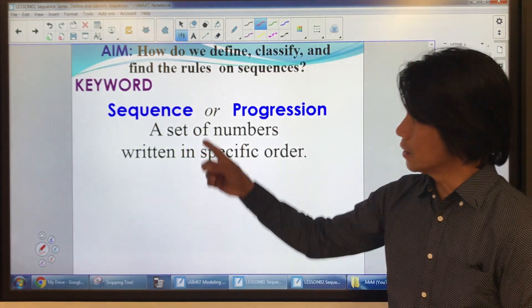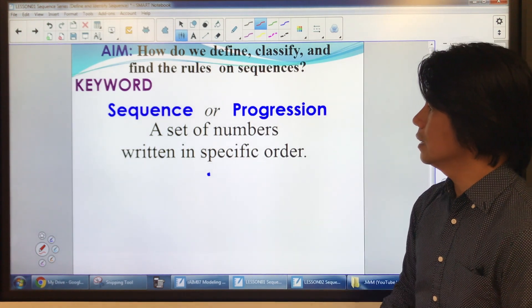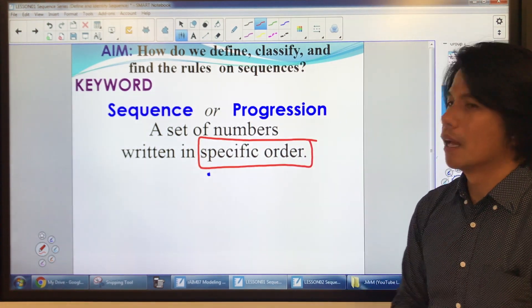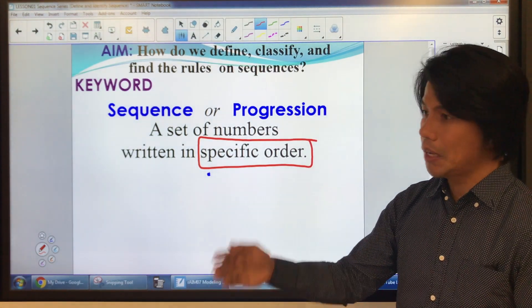Now let's go to the keyword. Sequence or progression is a set of numbers written in a specific order. So this is very important. There must be a specific order that they follow. There is a pattern.